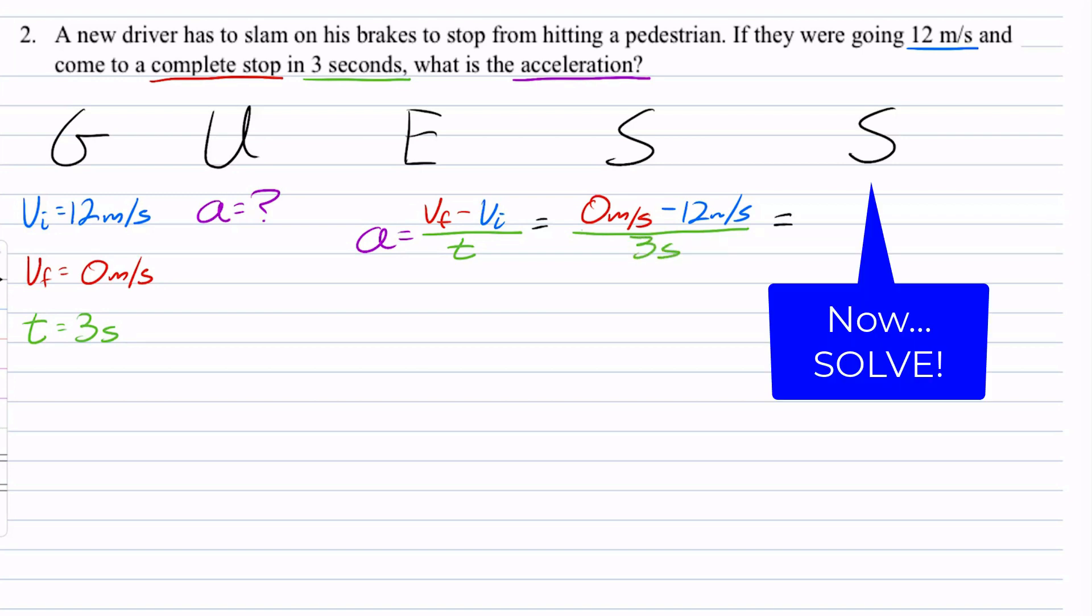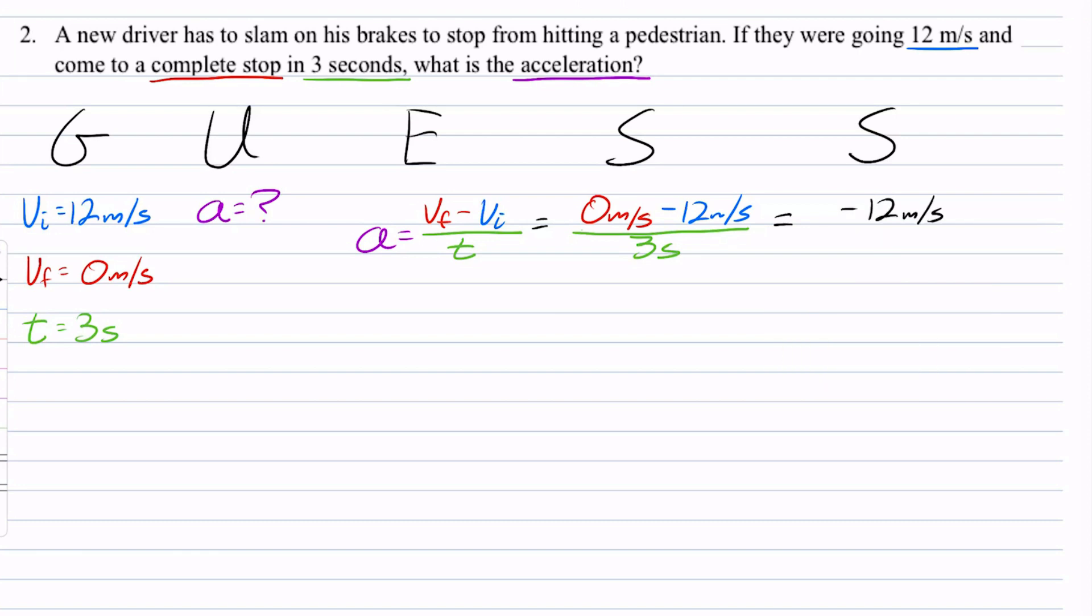So simplifying that in my solve step, I end up with negative 12 meters per second. And that is over 3 seconds.